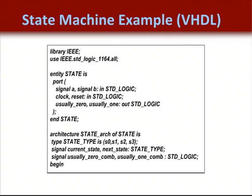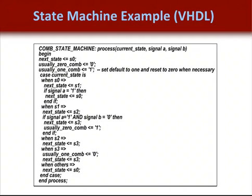Now we're going to look at the same finite state machine coded in VHDL. Again, we see four states and two outputs. On the next slide, we see that the next state transitions are defined in a large case statement with the finite state machine outputs also defined. This is not recommended since most finite state machines are larger and more complex, and they would get better speed by separating the outputs from the next state logic.